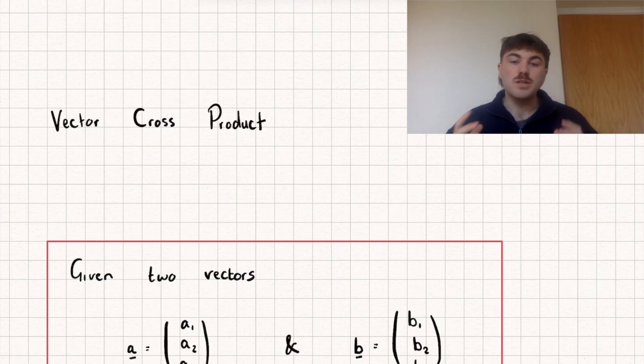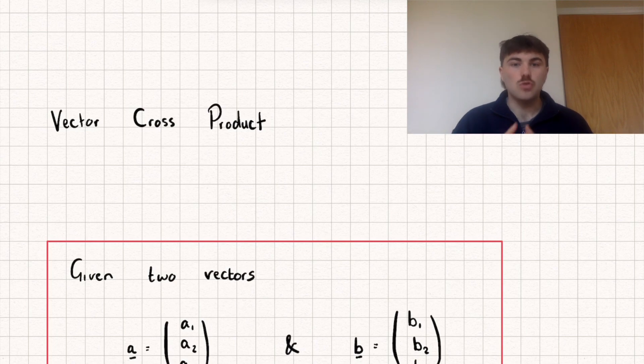Hello, in this video I'm going to be introducing you to the vector cross product, which is another way of multiplying two vectors together, like the dot product and scalar product, except this is going to return another vector rather than a scalar. This is going to be quite a short video, but if it is useful please do like and subscribe.